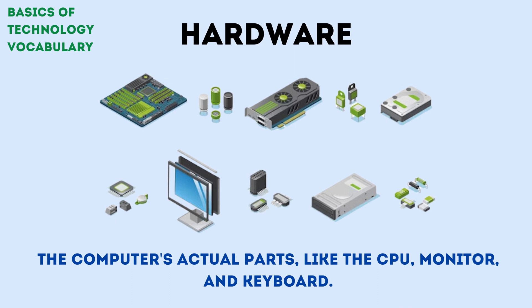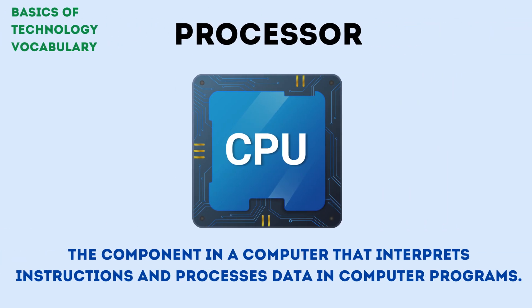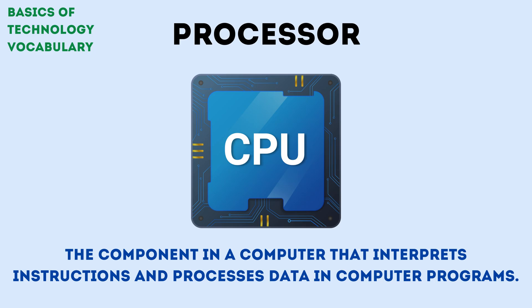Hardware includes the computer's actual parts, like the CPU, monitor, and keyboard. Digital refers to recording and processing information with two signs, 0 and 1. A processor is the component in a computer that interprets instructions and processes data in computer programs.